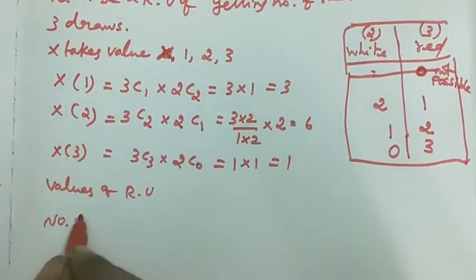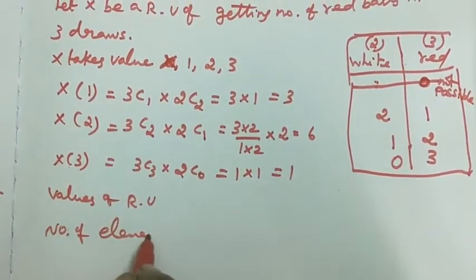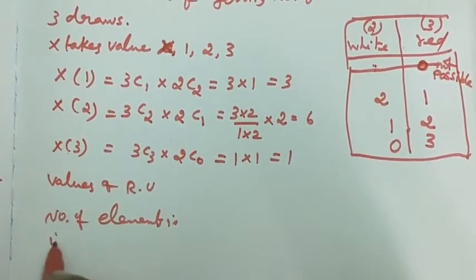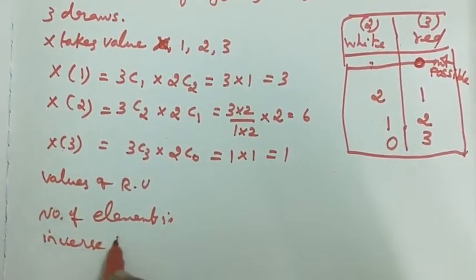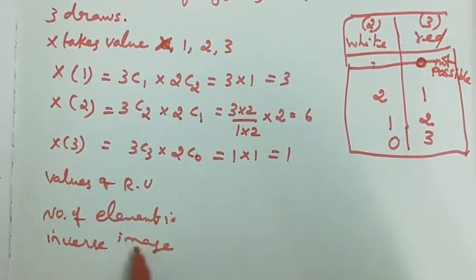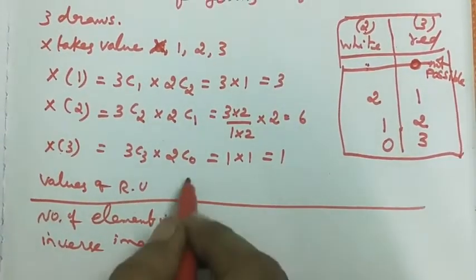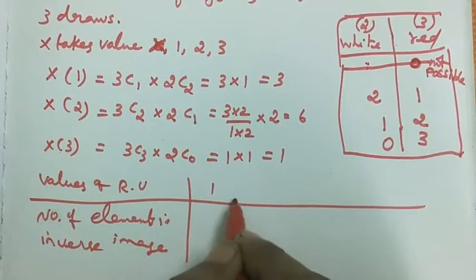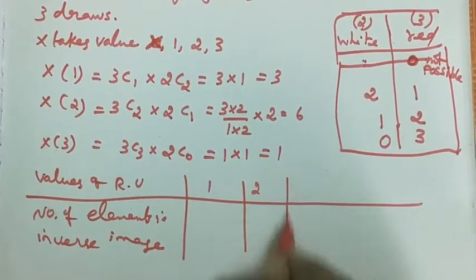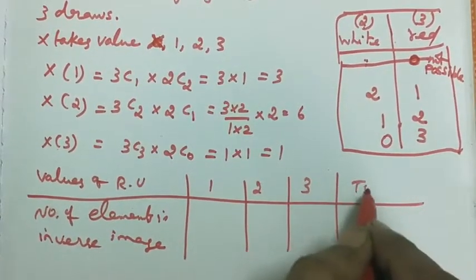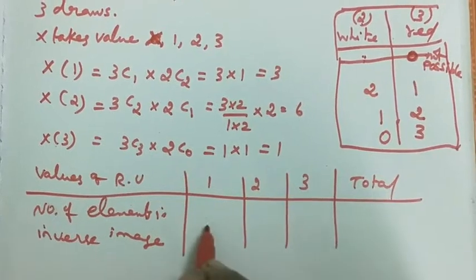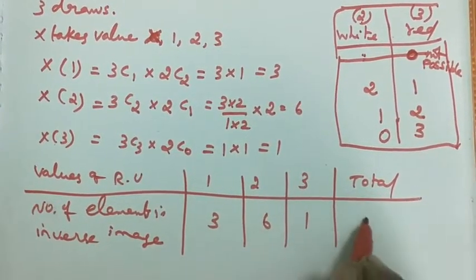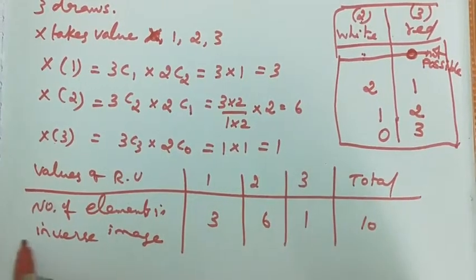Now we present the table with random variable x and number of inverse images. x=0 gives 0 (not possible), x=1 gives 3, x=2 gives 6, x=3 gives 1. The total is 0 plus 3 plus 6 plus 1 equals 10, which matches n(S).